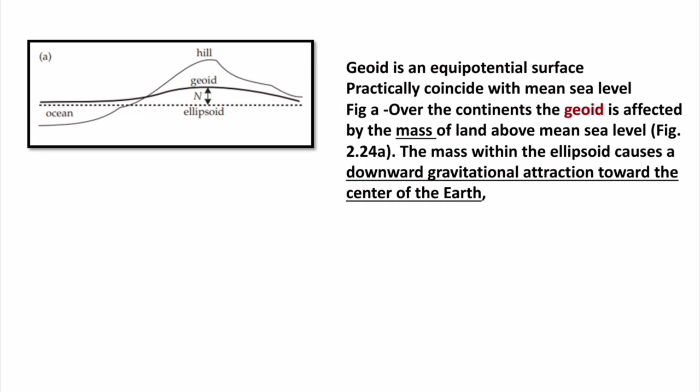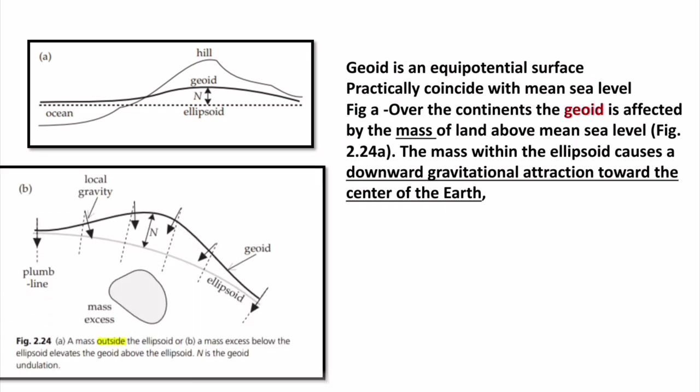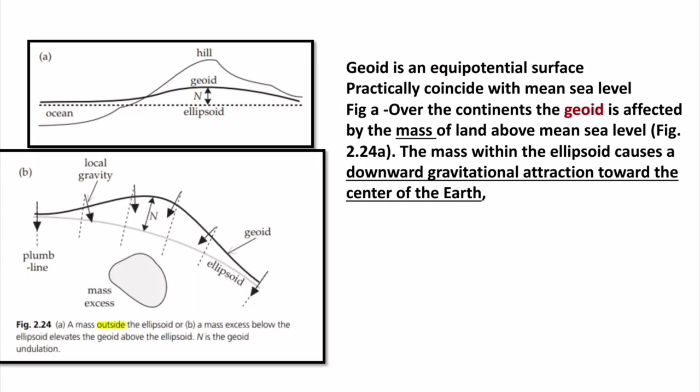The mass within the ellipsoid causes downward gravitational attraction toward the center of the Earth. As we have learned in lecture 3, if there is the Earth with mass M and a body of small mass m at a height, the Earth will attract that body toward its center — there will be gravitational attraction toward the center of Earth. Now let's see the second diagram.